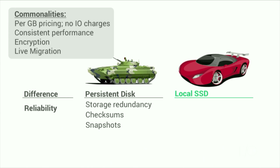Now for differences, starting with reliability. PD has additional reliability that comes from storing its data redundantly so that volumes can survive the sudden loss of hardware. Local SSD does not have this redundancy — it's up to you to protect the data that needs to survive storage failures. PD also has built-in checksums. Whenever you read data, no matter how long ago it was stored, PD makes sure it returns what was written to you and avoids silent data corruptions. Lastly, PD has a snapshot functionality that makes it easier for you to protect your data against user error and physical disasters. In terms of performance, while all the block storage options perform consistently, local SSD has much higher IOPS and is designed for sub-millisecond latency, making it ideal for the most performance-hungry databases.